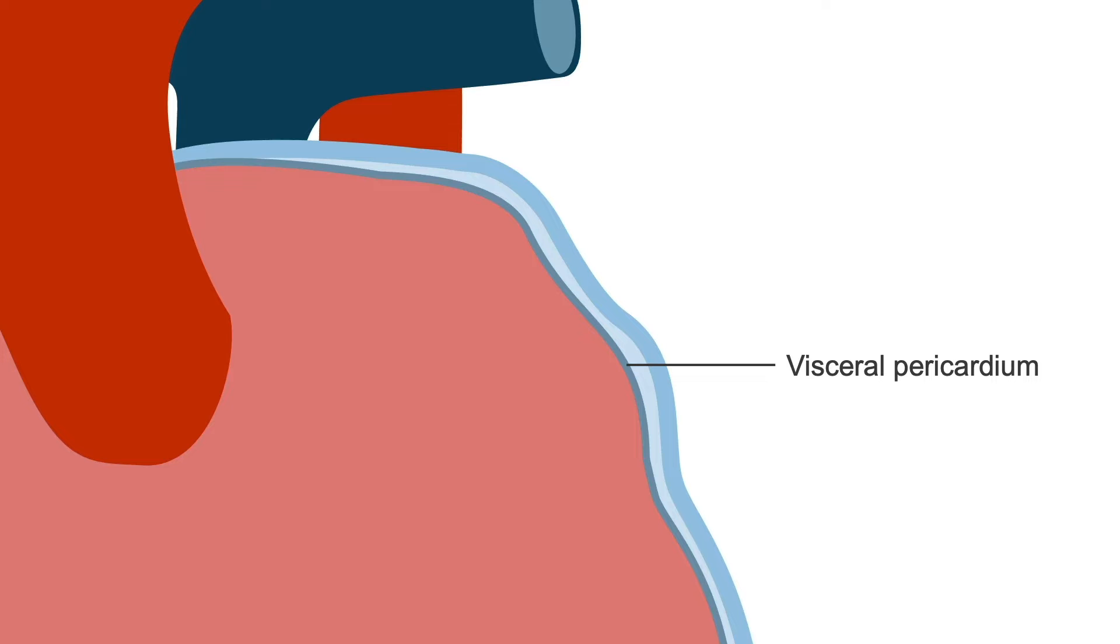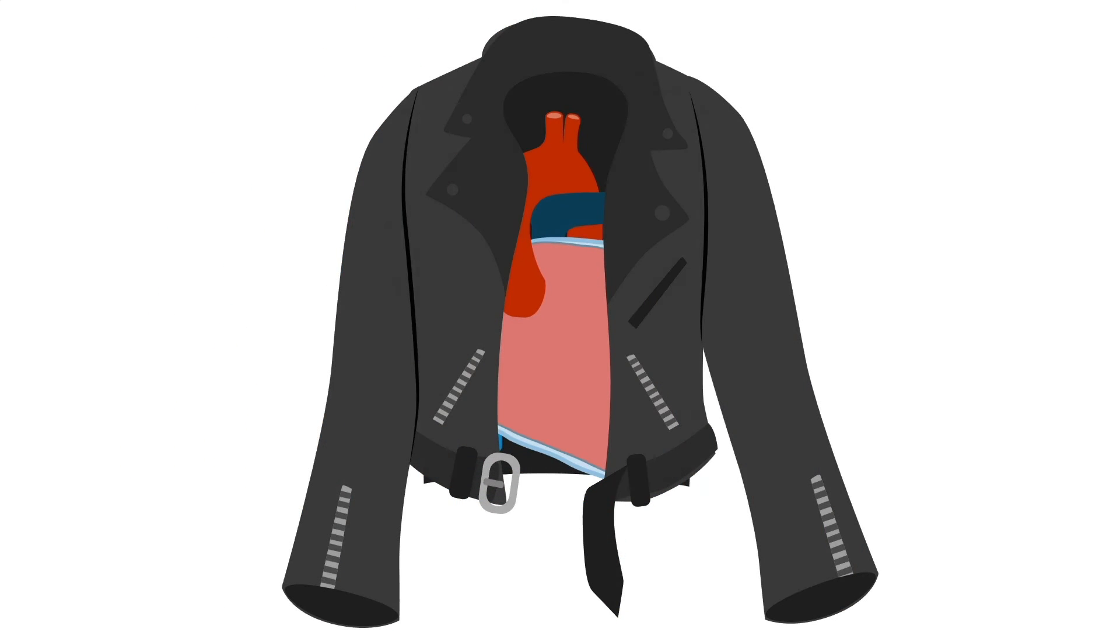The outer layer is called the parietal pericardium. And in the words of my cardiac surgeon friends, it's like smooth, glistening, thick, wet leather. Imagine the heart wrapped in a leather jacket.